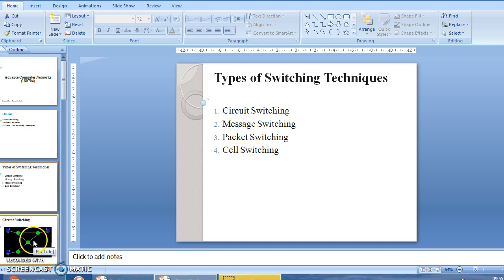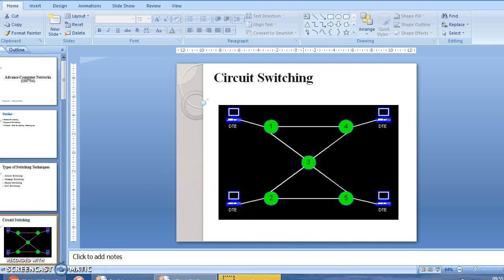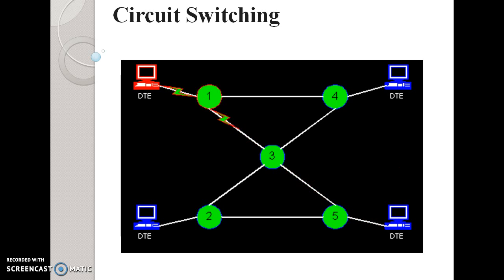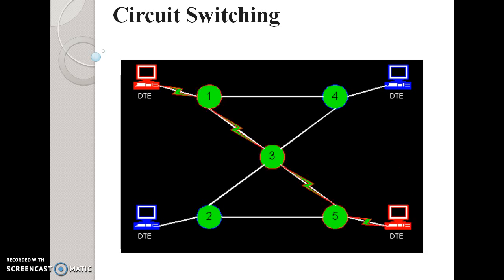In circuit switching, you can see the diagram here. In this technique, nodes are directly connected from sender to receiver in an unbroken path — nodes one, three, and five form the unbroken path. One dedicated path exists between both ends until the connection is terminated. For example, when you call a friend on your mobile phone, one dedicated path exists between your phone and your friend's phone.